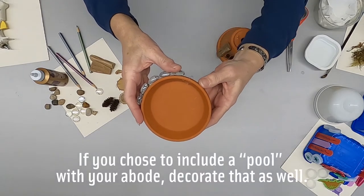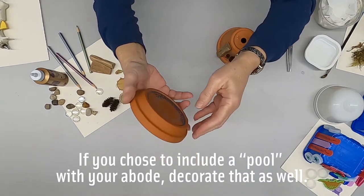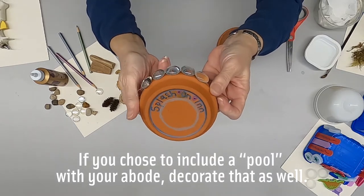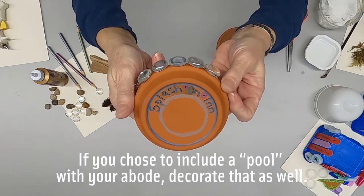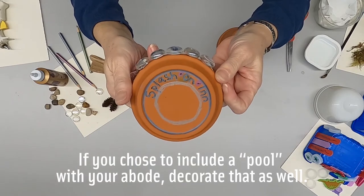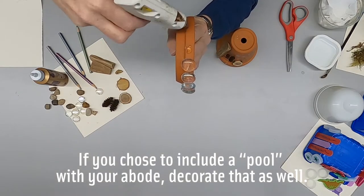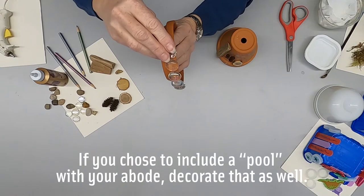Same thing with the saucer. This is going to become the toad pool or the splash on in. You can use the colored pencils or use the hot glue and attach all those other elements.